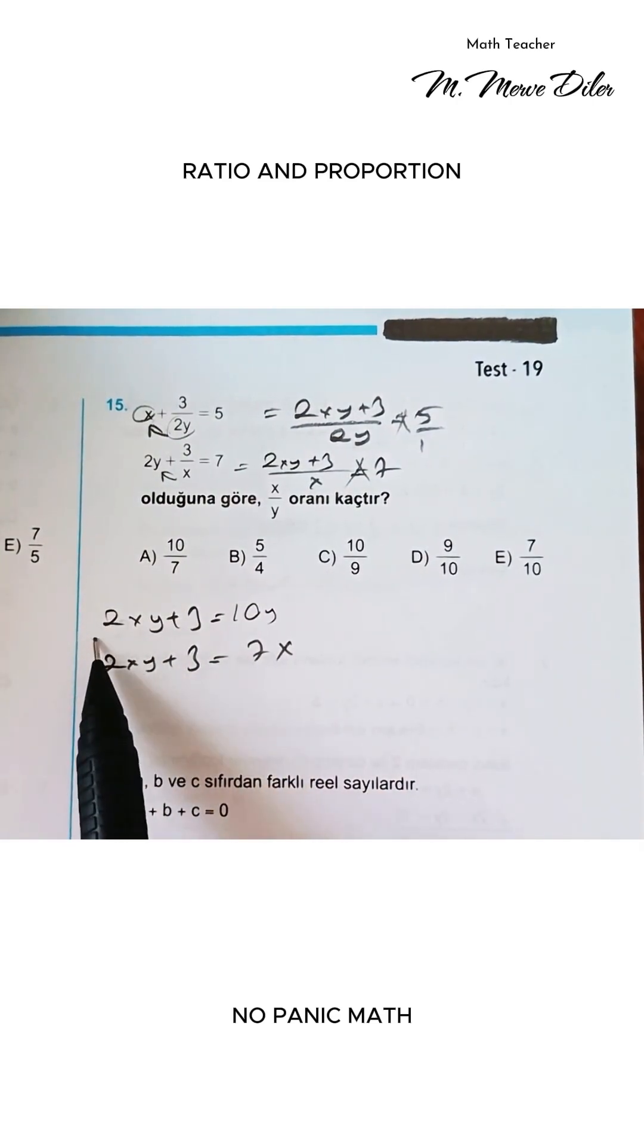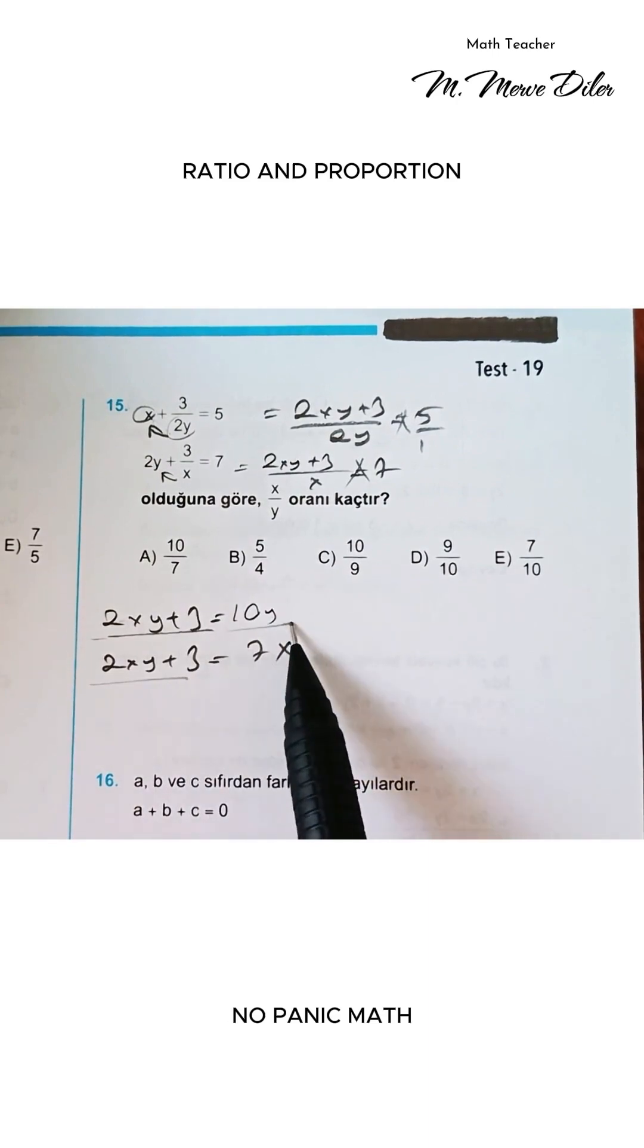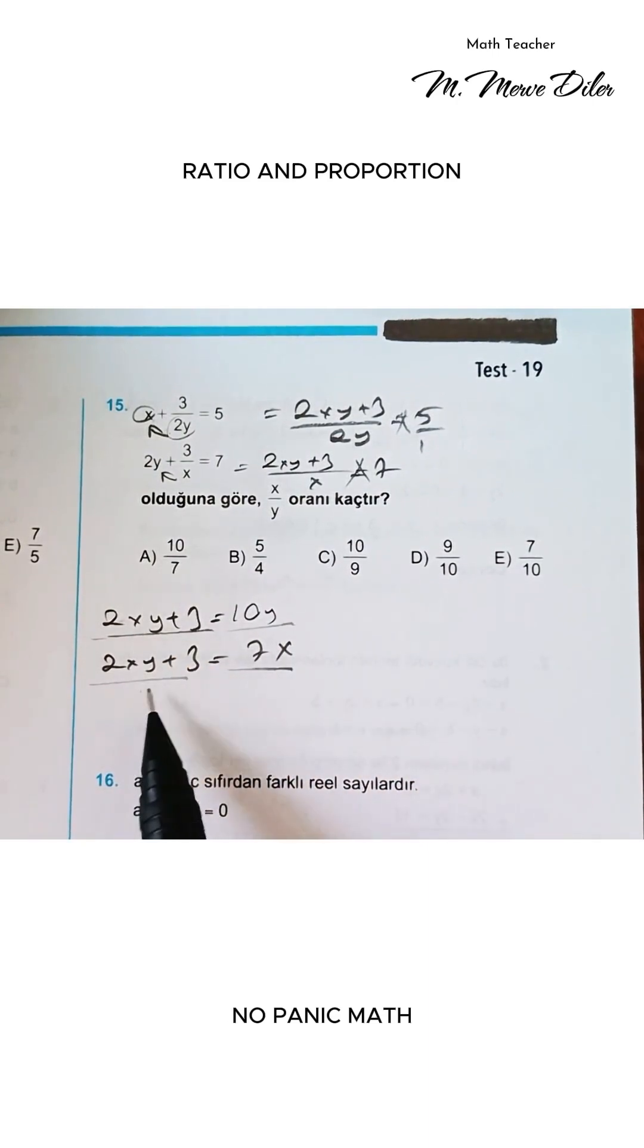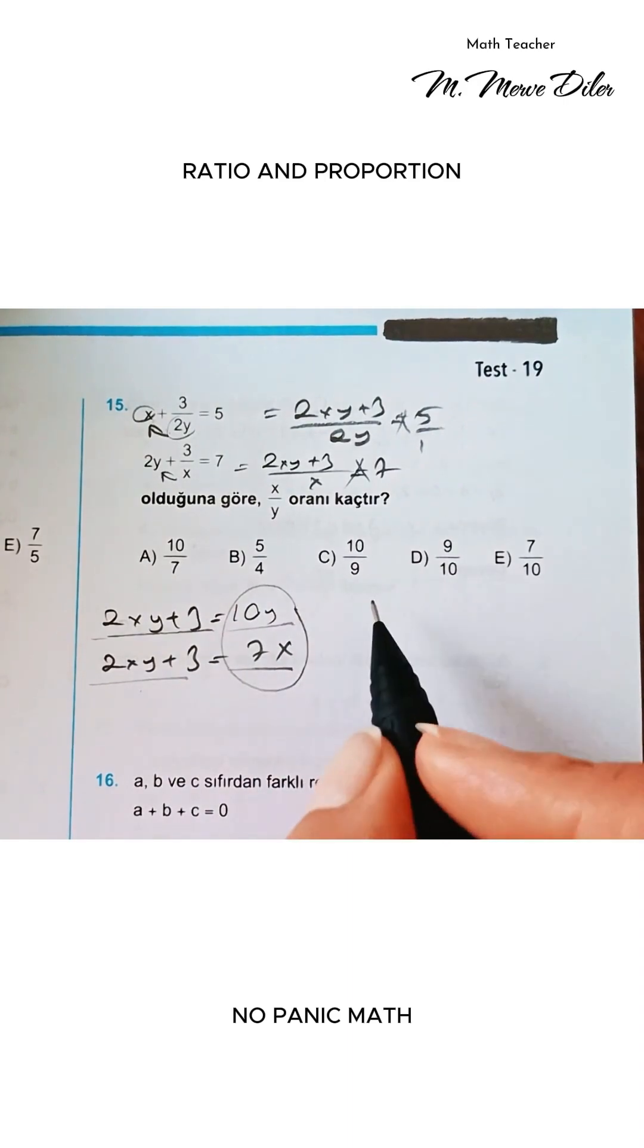Do you notice this guys? 2xy plus 3, 2xy plus 3. One equals 10y, and the other equals 7x. So, if these two are equal to each other, then this part must also be equal to each other guys.